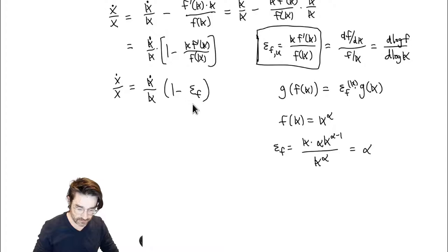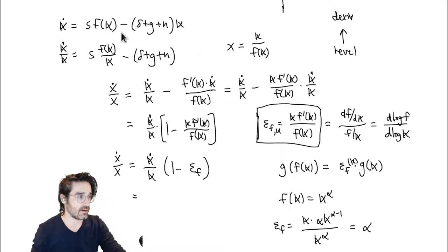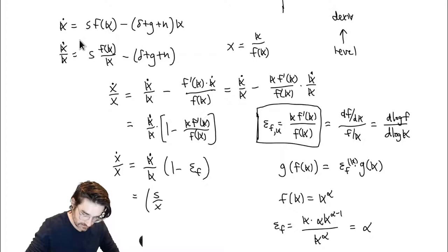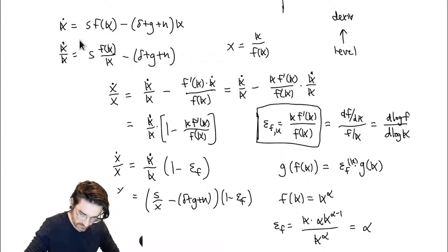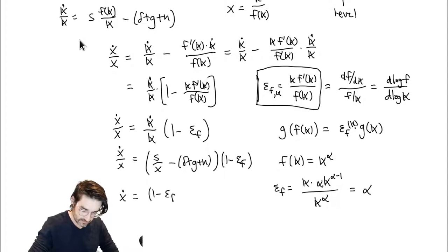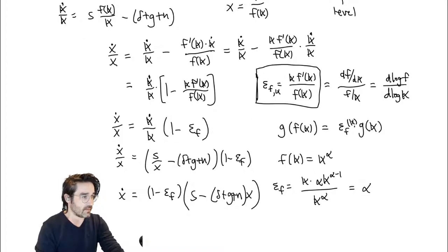Plugging back in K-dot over K into this, I chose the substitution so this is 1 over X — so you get S over X minus (Delta + G + N) times (1 - epsilon F). That's X-dot over X. Multiplying through by X, we get: X-dot equals (1 - epsilon F) times [S minus (Delta + G + N) times X]. This is what we get in the general case, corresponding exactly to Cobb-Douglas when epsilon F equals alpha.